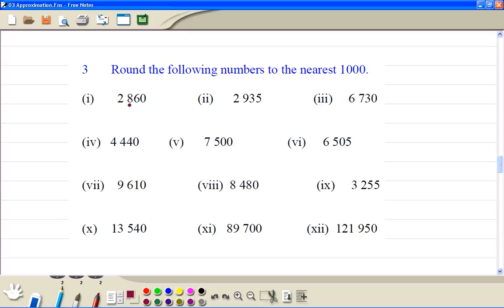To the nearest 1000, we look at the figure with 100. If it's 5 or more we round it up, so this is 3000. Up, up, up. No, just 4000. Up, up, up. No, no, no. Up, up, up. Up plus 122, 1000.